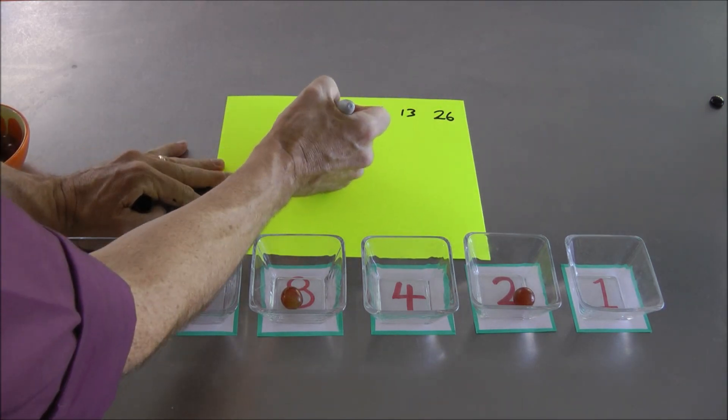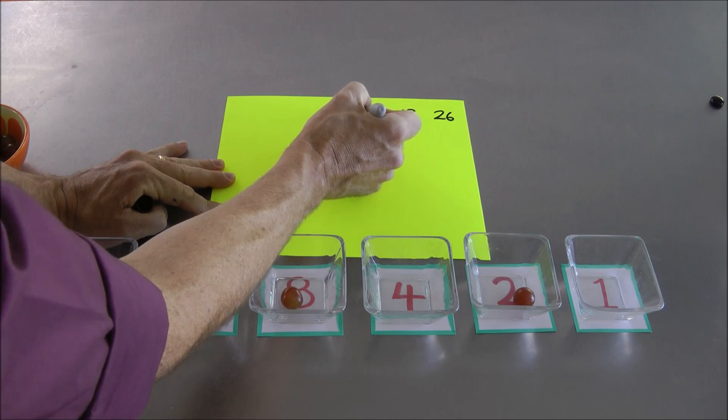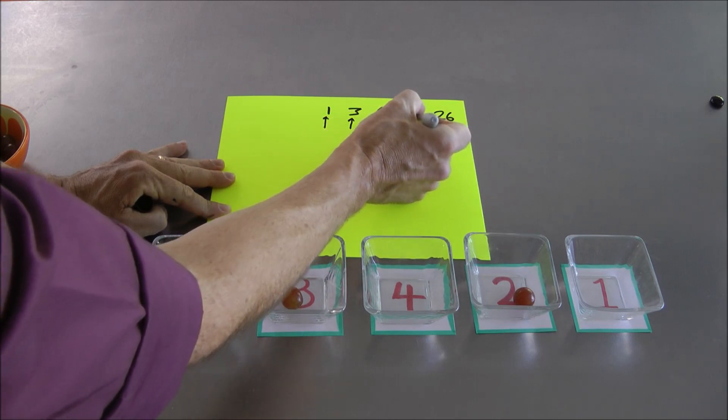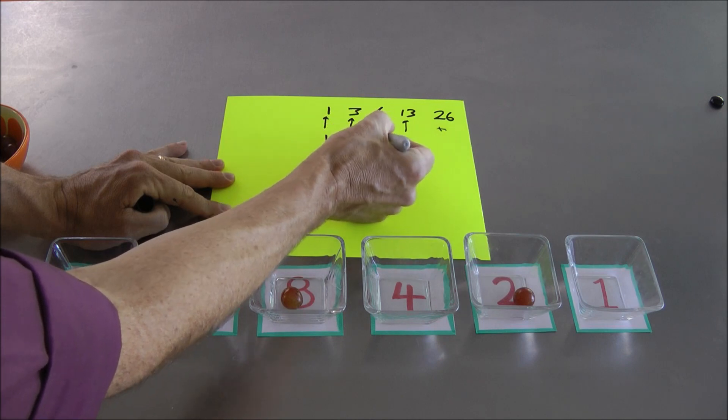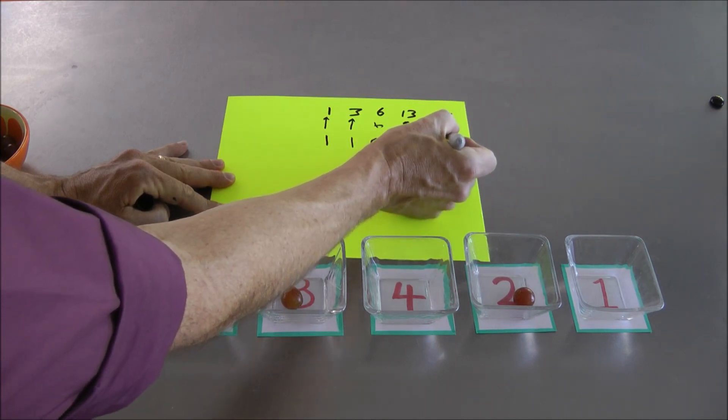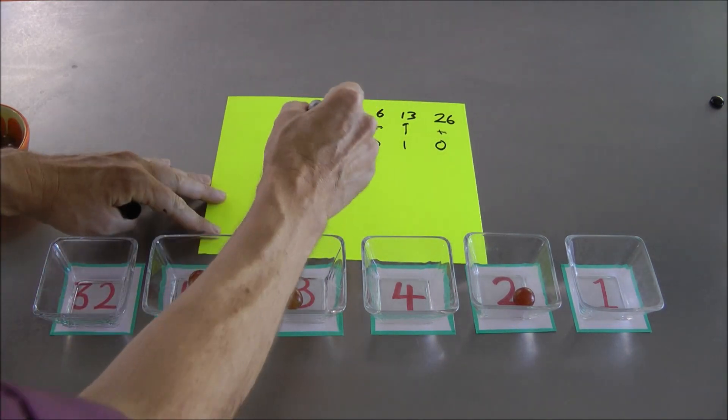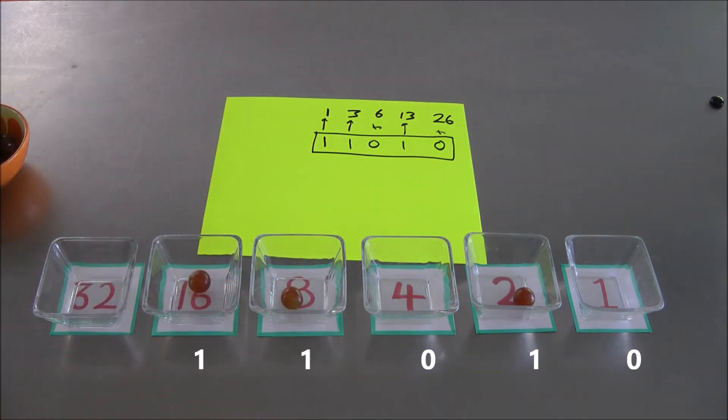Now look what happens here. Look for the odd numbers on the list you wrote. There's an odd number there. There's an odd number there. There's no odd numbers there. There's an odd number there. There's no odd numbers there. We've got one odd number, one odd number, no odd numbers, one odd number, no odd numbers. Whoa! Whoa! And that exactly matches the binary code of the number we're interested in. In this case, 26. Wow!